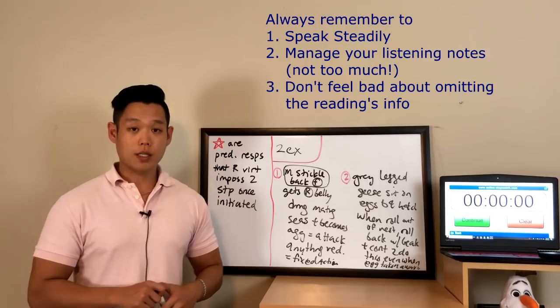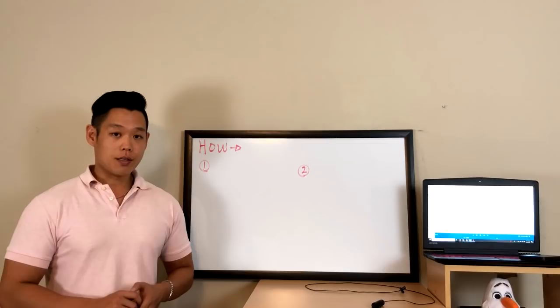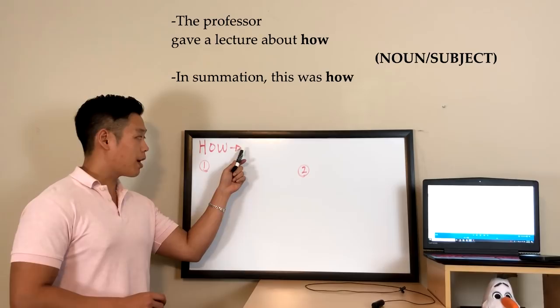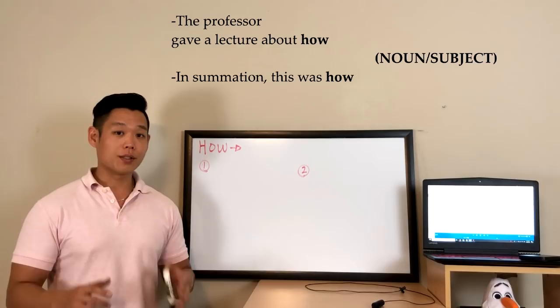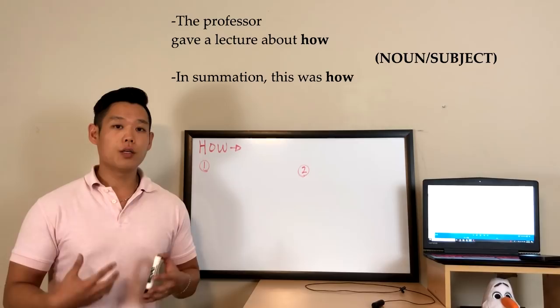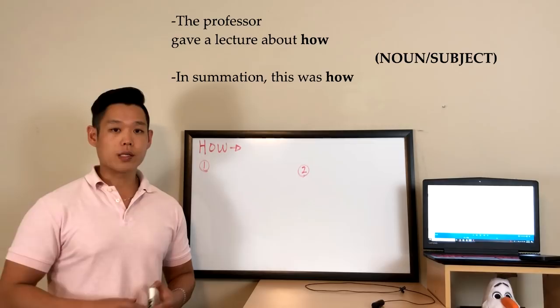Now let's move over to the dreaded Task 6. Task 6 does not have a reading passage, so I'm going to start the lecture pretty soon. Please pause the video and copy the note-taking diagram which is in red. Next to 'how,' after the arrow, you need to first write down a noun — the subject — and then a complete sentence. The subject, the main character, is going to be revealed in the introduction of the lecture, so really listen carefully to the nouns the professor says and try to identify the main character, writing it down as quickly as possible.